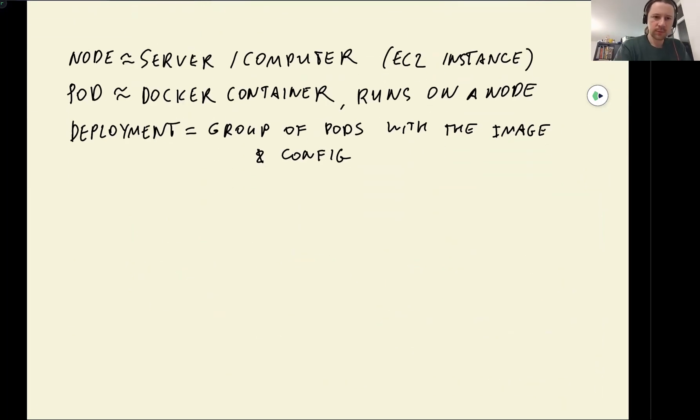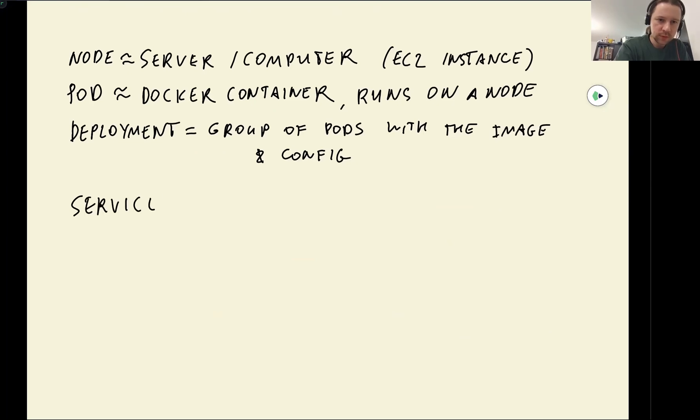Now I want to write it down. So service. We can think of the service as the main point of entry to our deployment, to our pods. So we send requests to the service and then the service does the routing. It gets the request and then decides which pod should handle this. This is the entry point and it routes the requests to the pods.